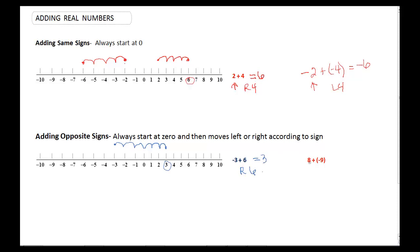If we look at this one, we have 8 plus negative 9. So we start at 8. And then we're going to go negative 9, means we're going to go to the left 9. So we go 1, 2, 3, 4, 5, 6, 7, 8, 9, and we get down here at negative 1.